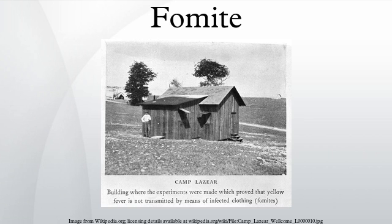Researchers have discovered that smooth surfaces like doorknobs transmit bacteria and viruses better than porous materials like paper money, because porous, especially fibrous, materials absorb and trap the contagion, making it harder to contract through simple touch.